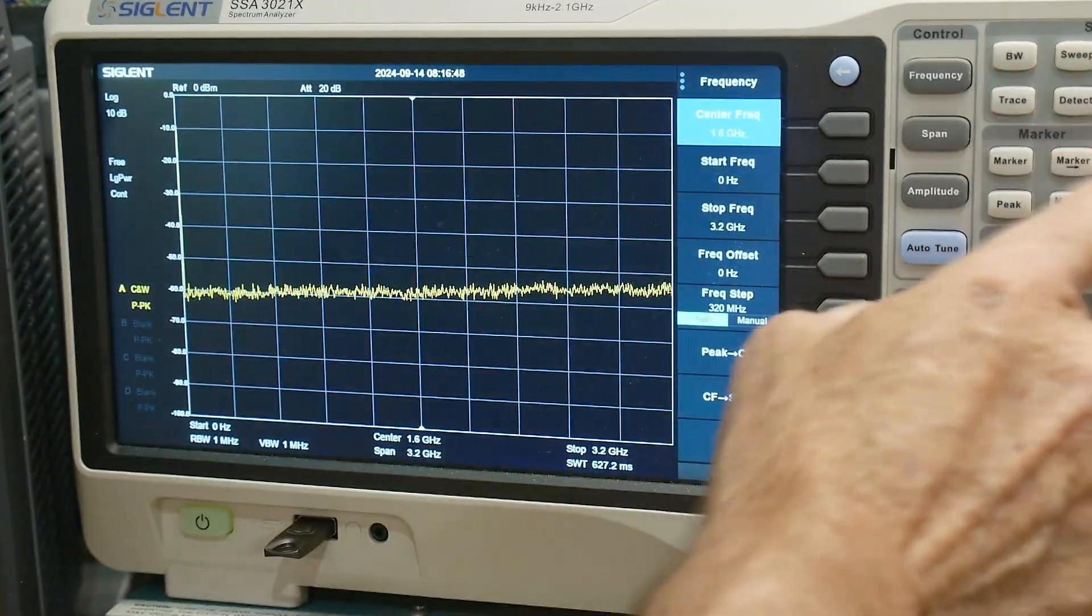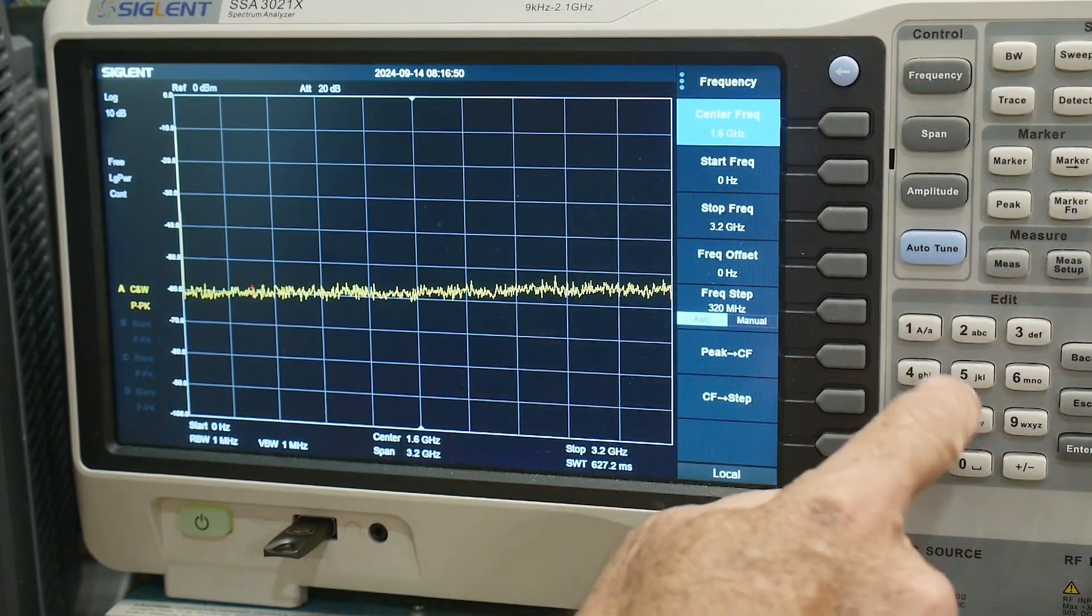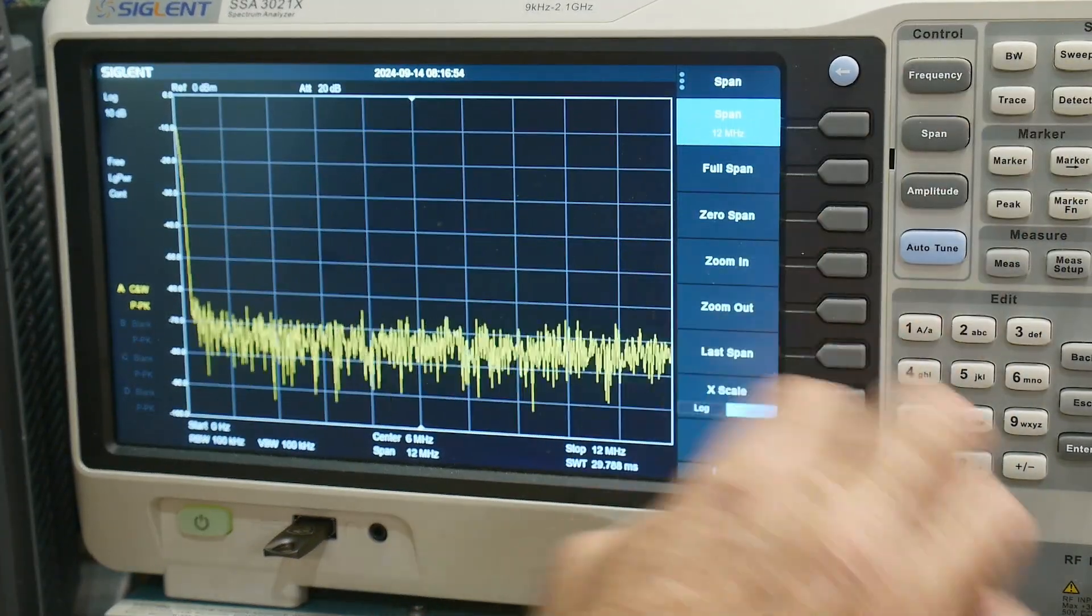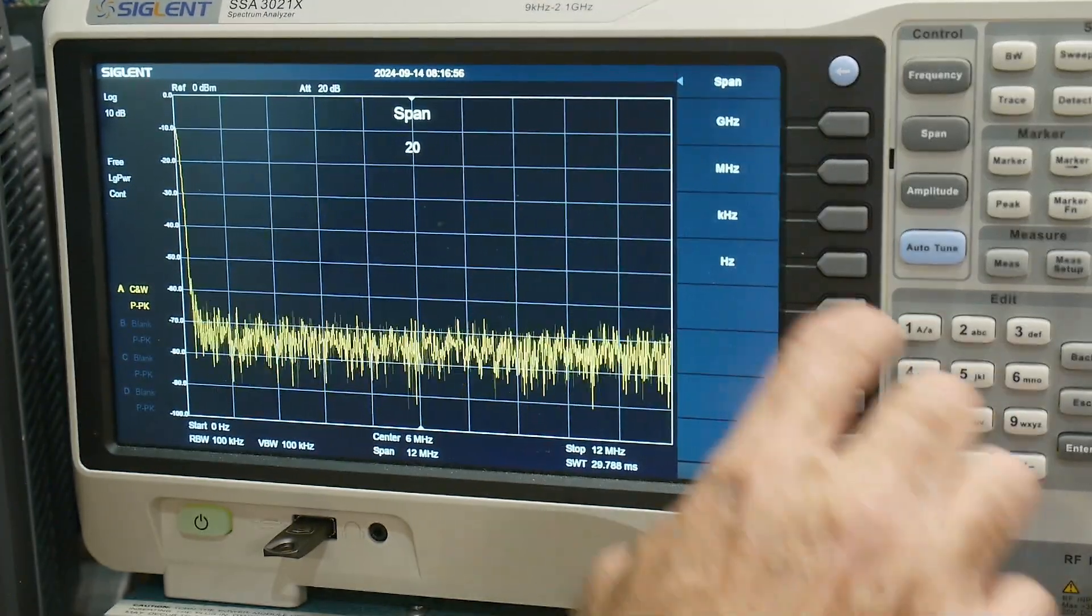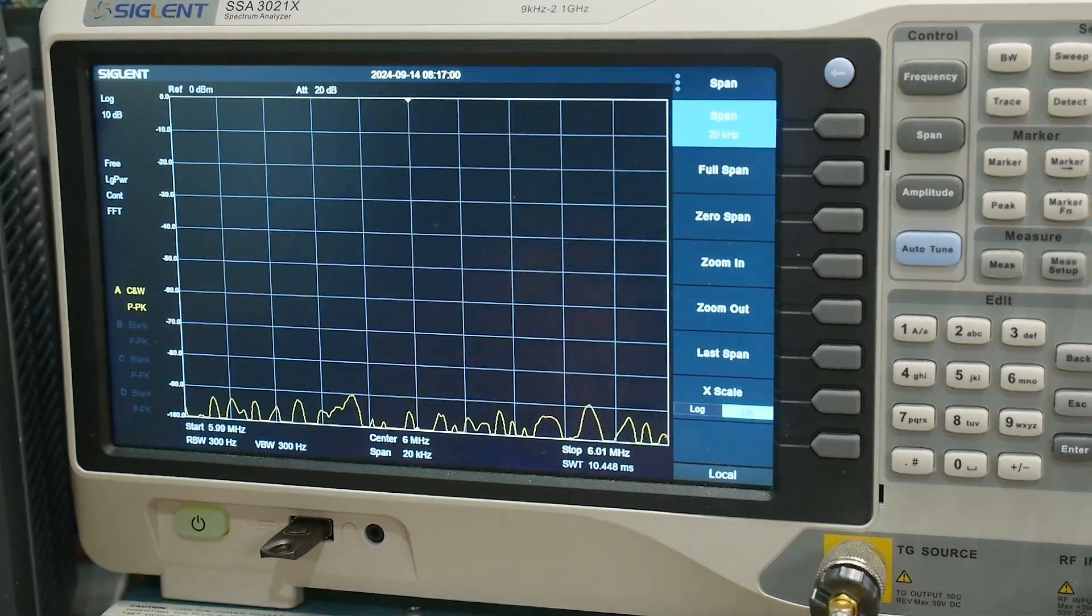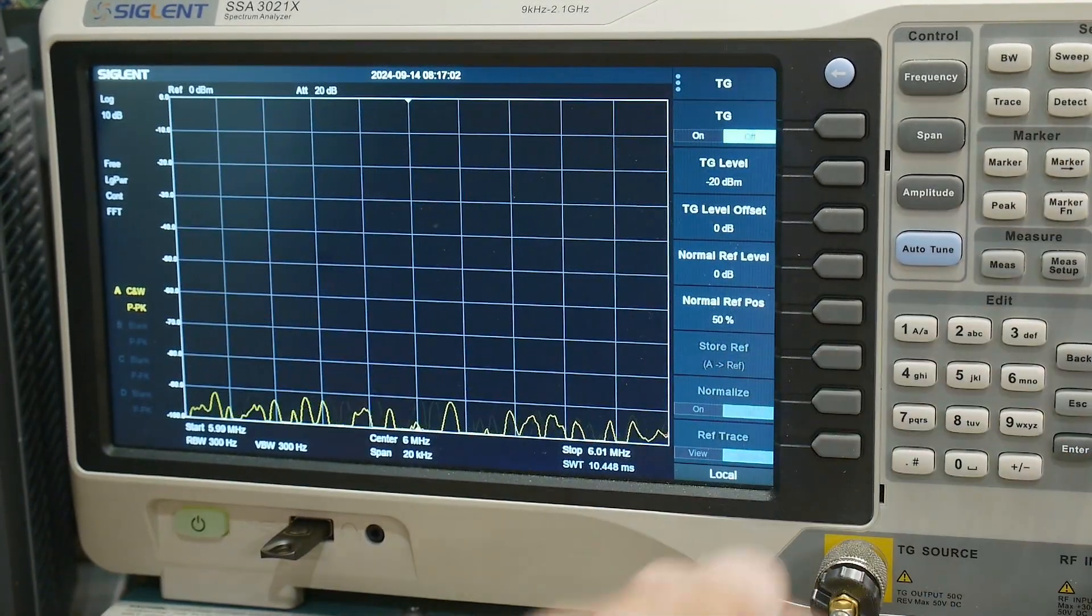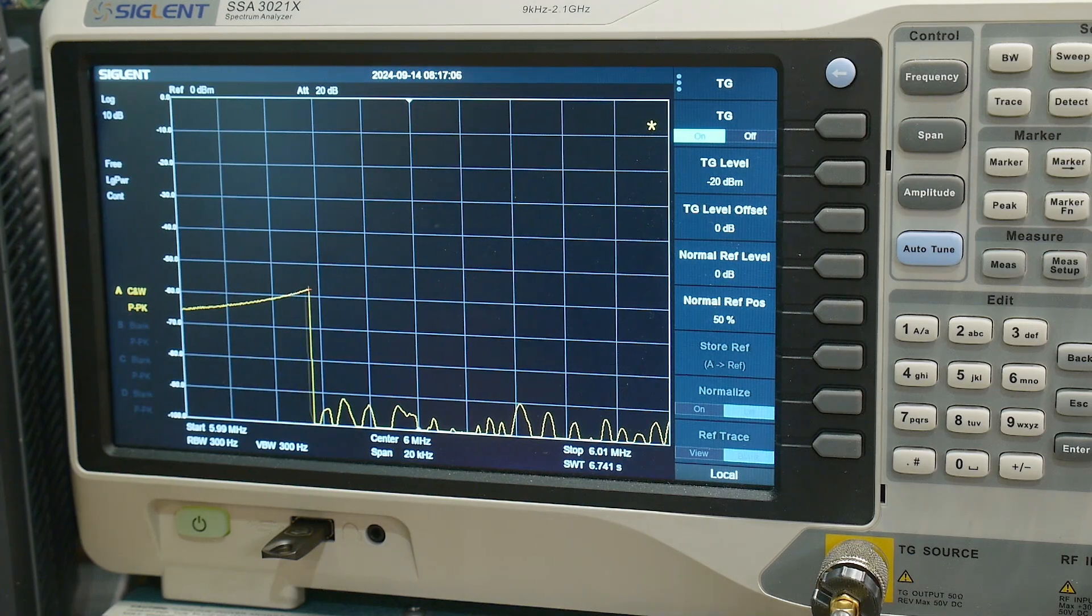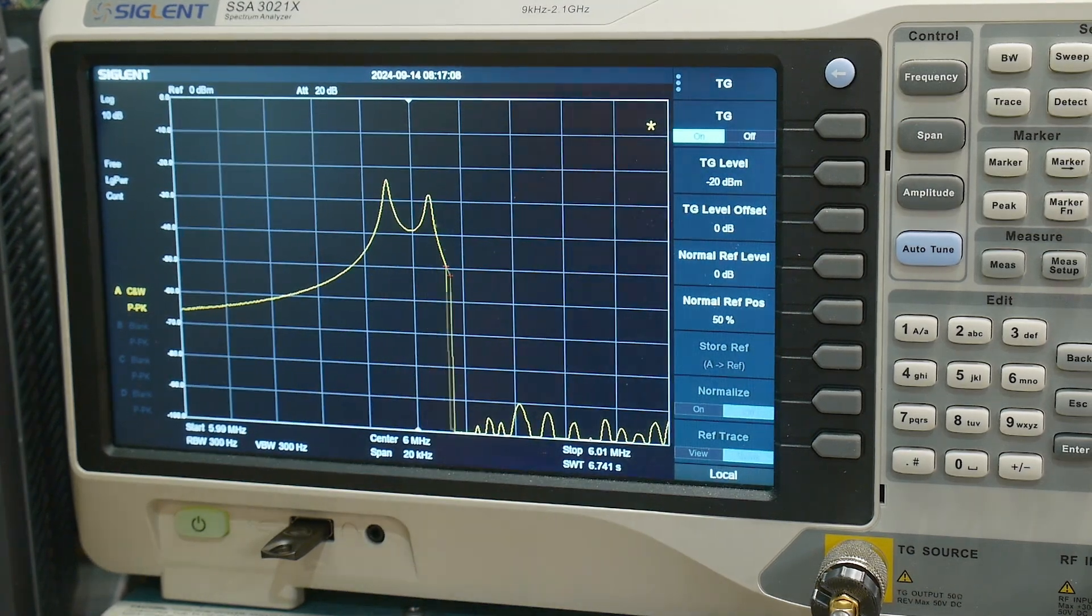We'll do a frequency center of six megahertz and a span of 20 kilohertz because it's a very narrow filter. Then we'll turn the tracking generator on.